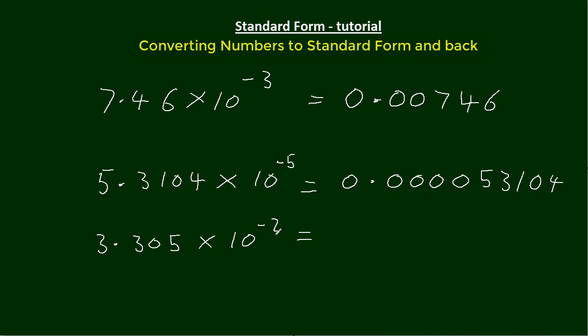And this one here is to the minus 2. 0, 0, there's one of the numbers. And then the 3 goes there because it's the second number. 3, 3, 0, 5.